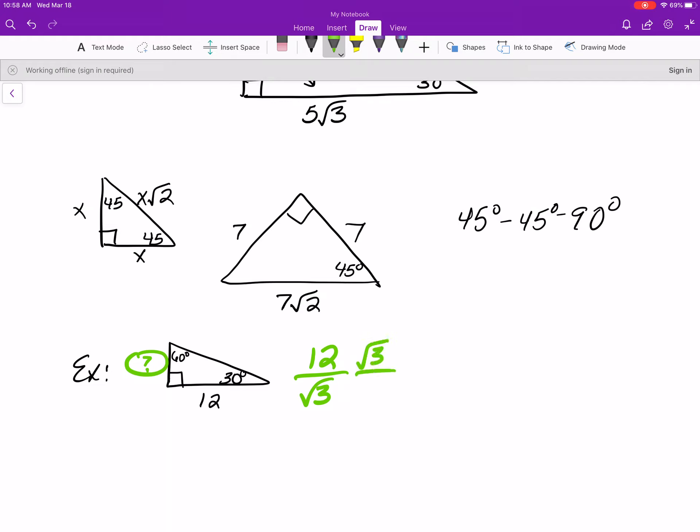But we have to rationalize that. So you'll see the answer written in proper math form. They would do 12 square root of 3 over 3. And then that would reduce to 4 square root of 3, which is weird, because now the square root of 3 is on the side across from the 30, which is not what we think of, but it actually is the correct ratio.